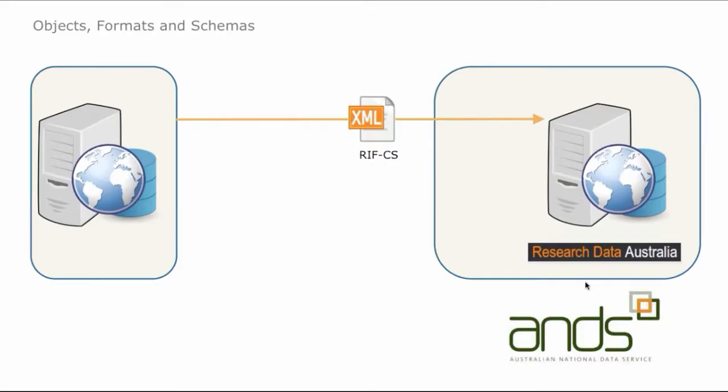Up until the last release, we required RIVCS Schema XML for harvesting, as Geri described. We've now made some modifications so that we can accept metadata schemas other than RIVCS, and we've enabled this by having a crosswalk actually on the ANS registry side.